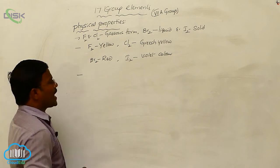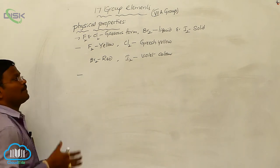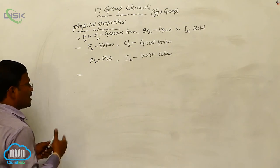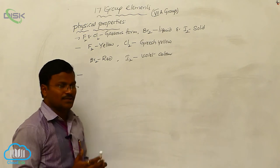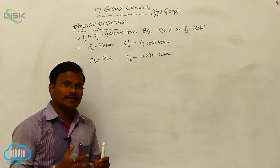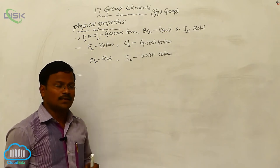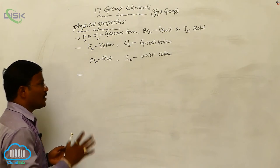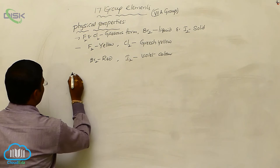These halogens will have specific physical properties. What are those specific physical properties? Their solubility and their electron configuration, ionization enthalpy, electron gain enthalpy, and electronegativity — these are the physical properties of halogens. First, let us learn about electron configuration.